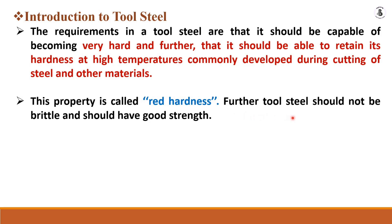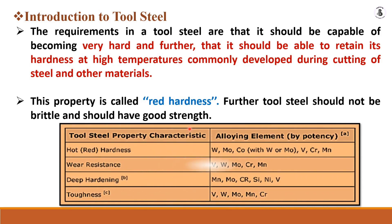Tool steel should not be brittle and should have good strength. To achieve hot hardness or red hardness, alloying elements such as vanadium, molybdenum, cobalt, chromium, and manganese are added into the steel material. Hot hardness, also called red hardness, is a very essential condition for tool steels.